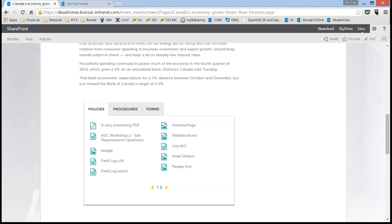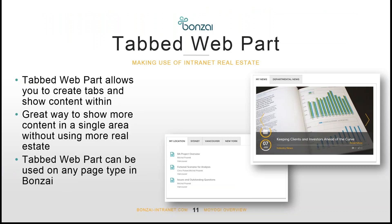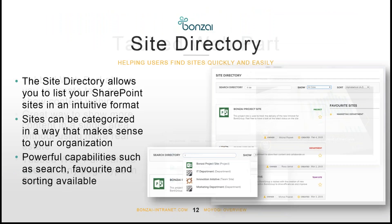That's the tabbed web part — a really great new core feature of Bonsai. The next thing, something I'm really excited about, is the site directory module. As I mentioned in the intro, for larger organizations, having a centralized listing of sites to find different sites within an organization isn't a great user experience in SharePoint 2013. We've developed a site directory module that allows you to list your SharePoint sites in an intuitive format. You can categorize those sites — we've got project sites, departmental sites, team sites on the left-hand side — and users can search, favorite, and sort sites as well.